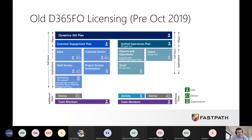When we look at the licensing model that currently exists within F&O, we need to do a little history lesson. If you purchased your F&O instance pre-October 2019, or renewed before then and haven't renewed since, this is the licensing model you're probably currently on. You have the Dynamics 365 plan at the top, with the ability to purchase a customer engagement plan or unified operations plan, giving you access to everything within those systems. You also had activity and team member licenses underneath these.